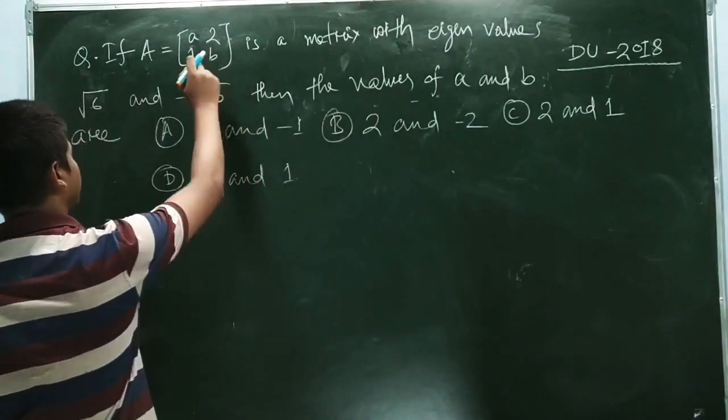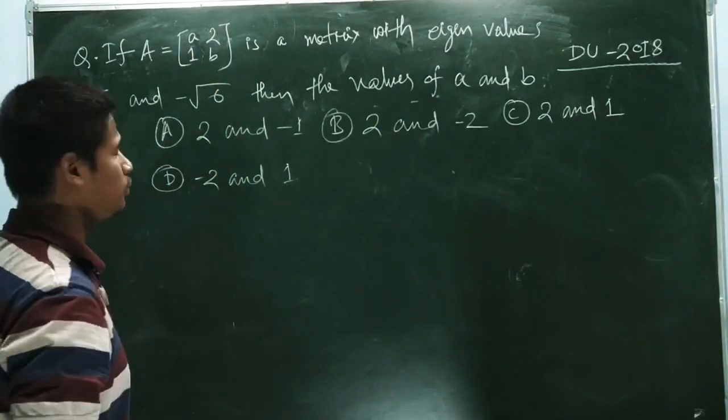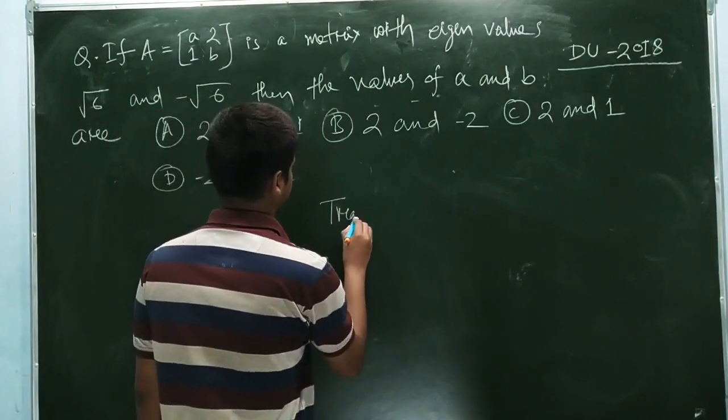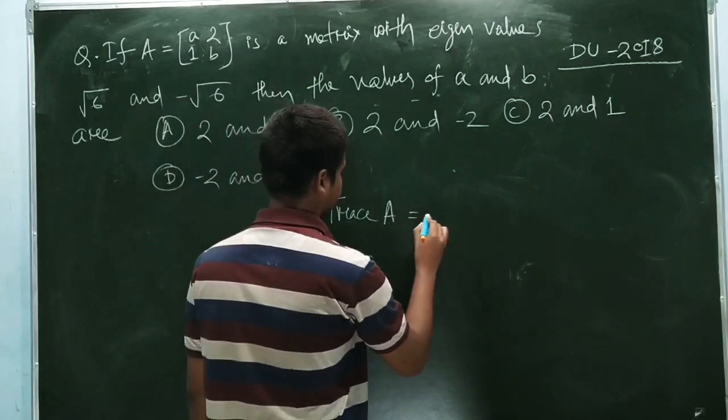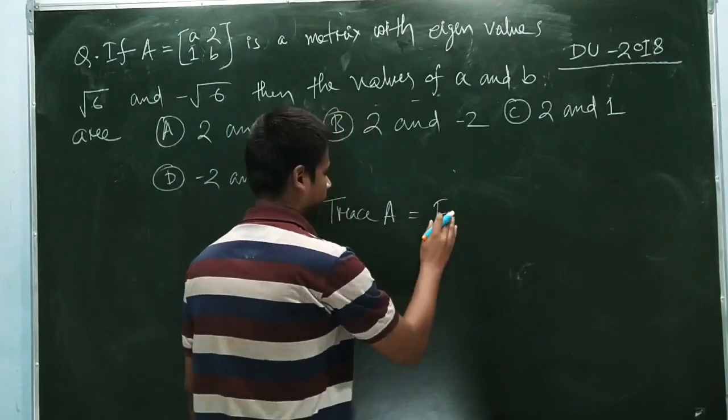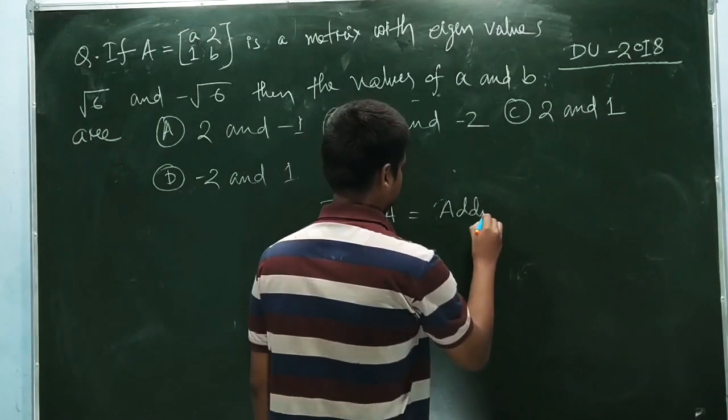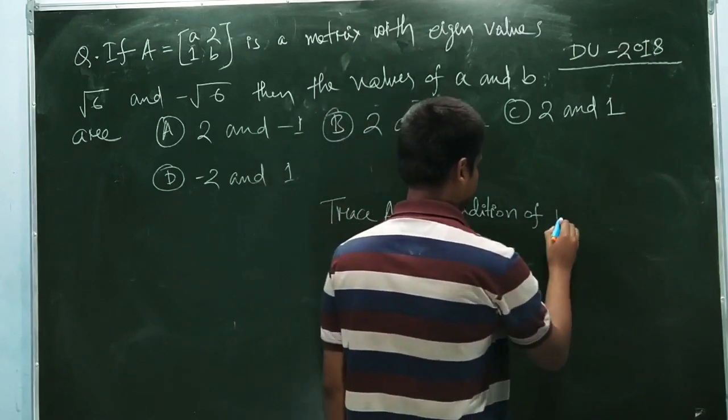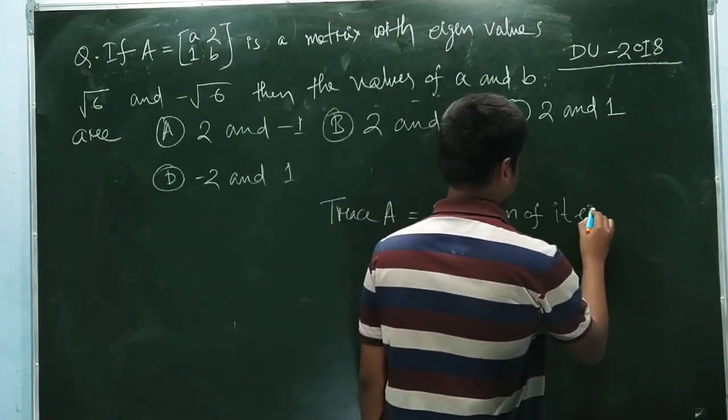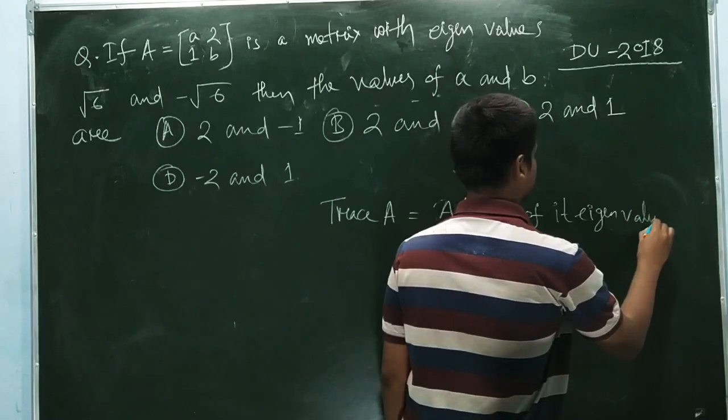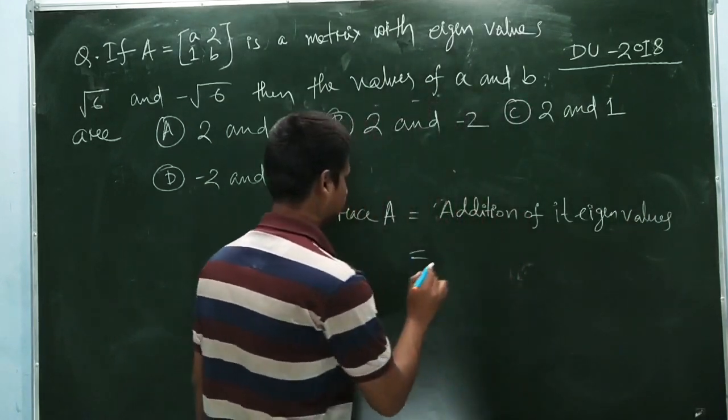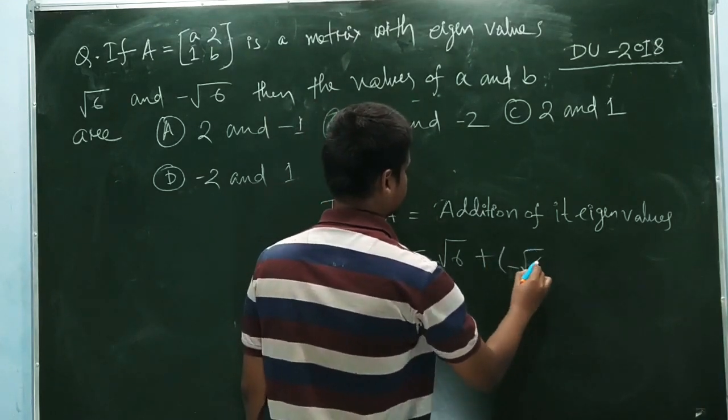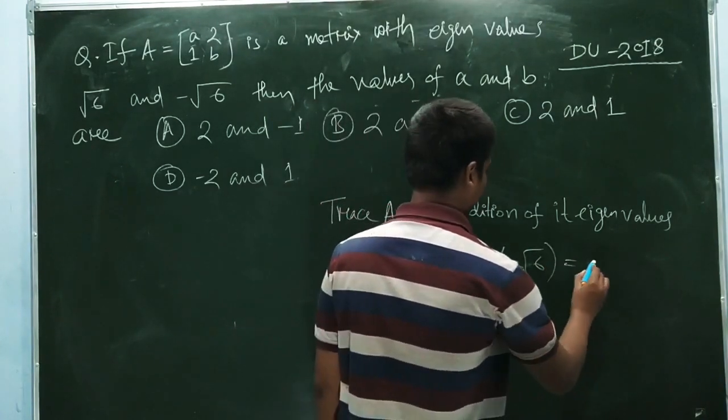It's a very simple question. We know that trace of A is nothing but the addition of its eigenvalues. Now what are the eigenvalues? Root 6 plus minus root 6, which is equal to 0.